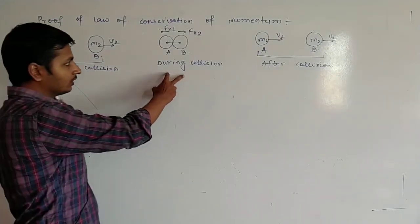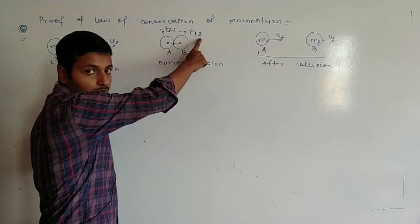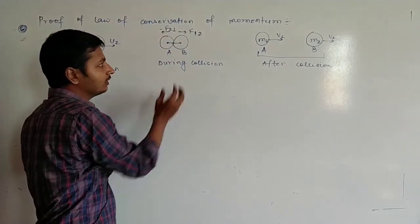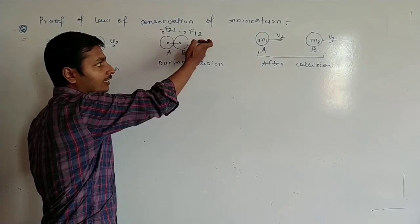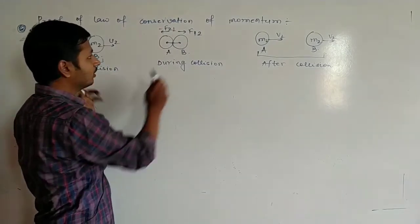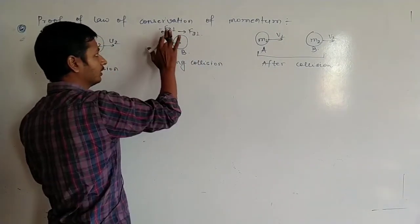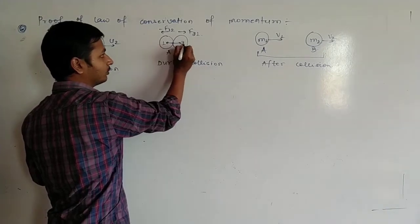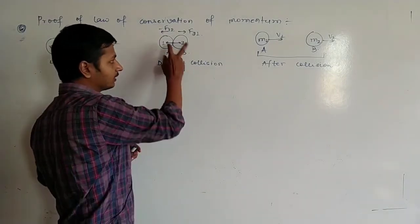During collision you will see that the net external force exerted over 1 due to 2. And here f of 2 due to 1. And here is f of 1 due to 2. This object is 1 and this object is 2. And this condition is during collision.